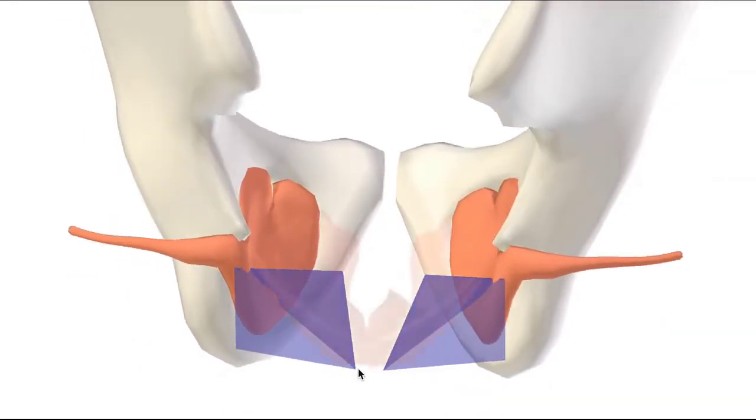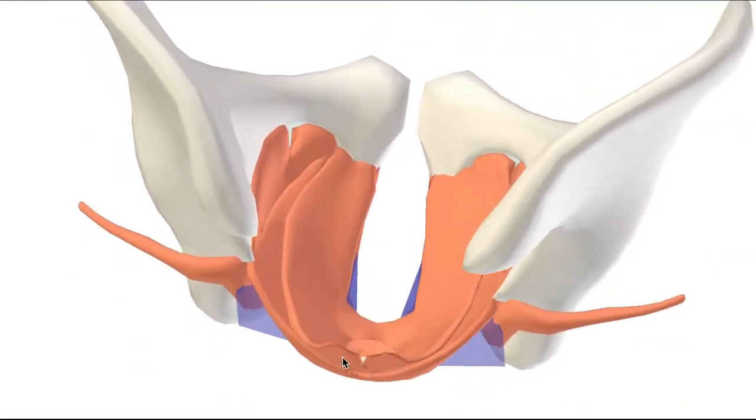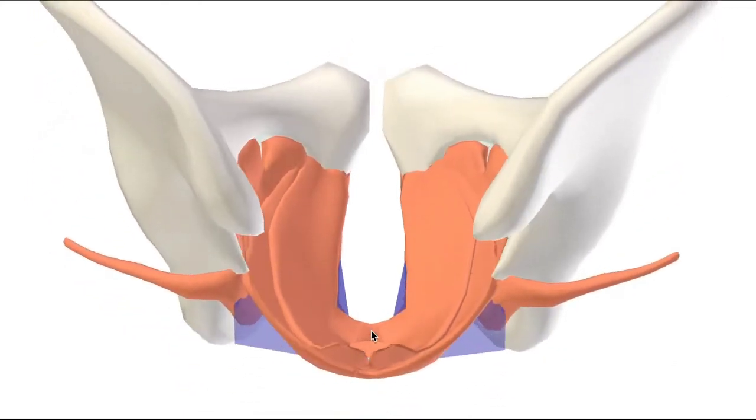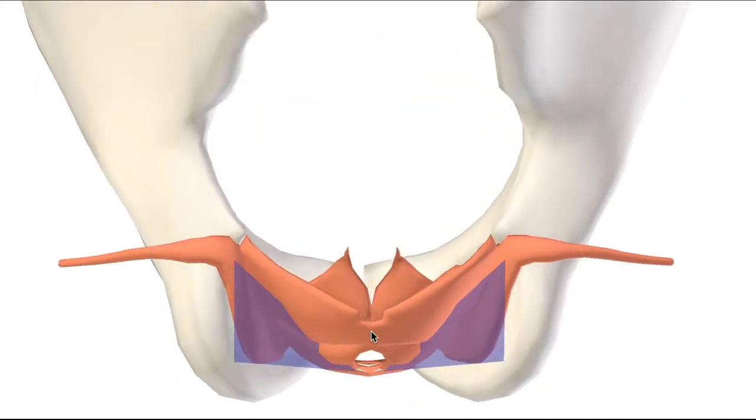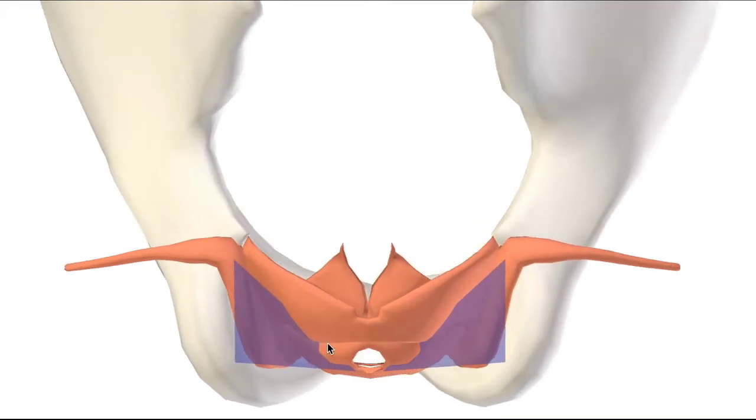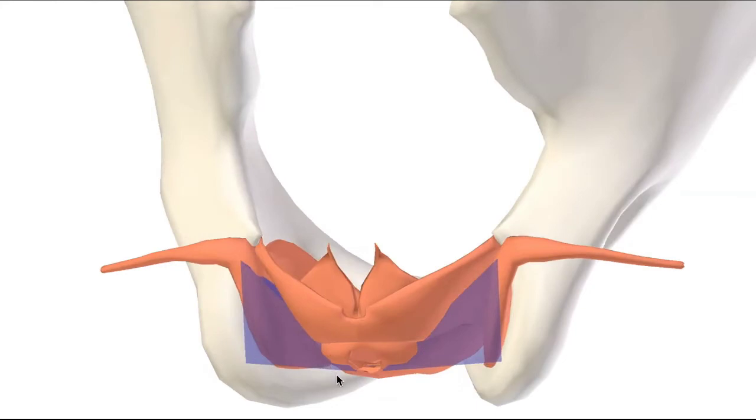Let's bring in the medial wall now, which is, of course, levator ani. So now we see that the space exists between the bowl-shaped pelvic floor and the bones of the pelvis, essentially.